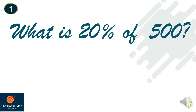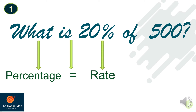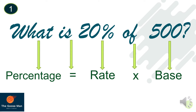Let's identify the percentage, base, and rate in this example. What can be considered as the percentage comes before the word 'is.' The word 'is' in symbol is equal to. 20% is the rate because it has a percent symbol. The word 'of' in symbol is multiplication, and 500 is our base because it comes after the word 'of.'